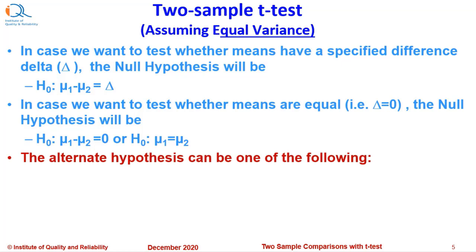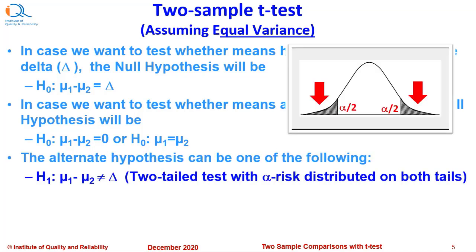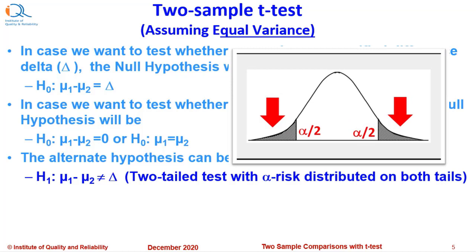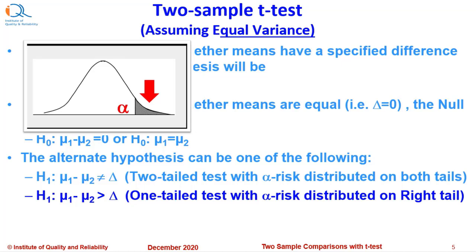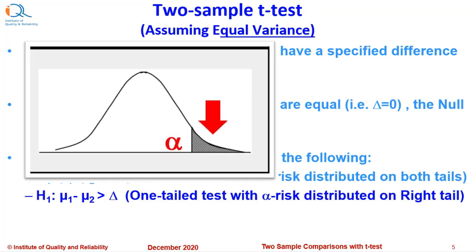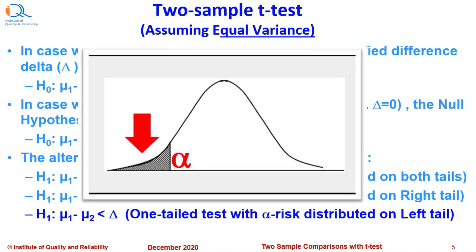The alternate hypothesis can be one of the following. H1: mu1 minus mu2 not equal to delta. In this case it will be a two tail test with alpha risk distributed equally on both the tails. H1: mu1 minus mu2 greater than delta. This would be a one tail test with alpha risk distributed on the right tail. H1: mu1 minus mu2 less than delta. This would be a one tail test with alpha risk distributed completely on the left tail only.